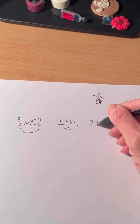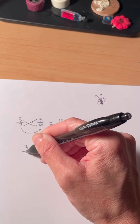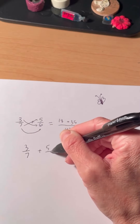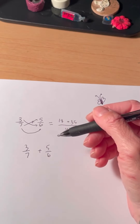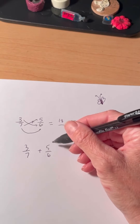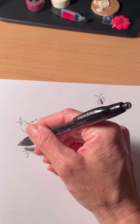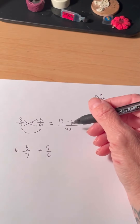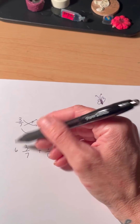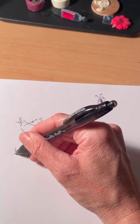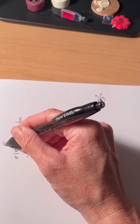But why does this work? Let's go back to our 3/7 and 5/6. Our goal here is to get a common denominator between the 7 and the 6. So let's multiply 3/7 by 6 — but if we multiply by 6, it might change things. So let's multiply it by 6 over 6, which is just 1.